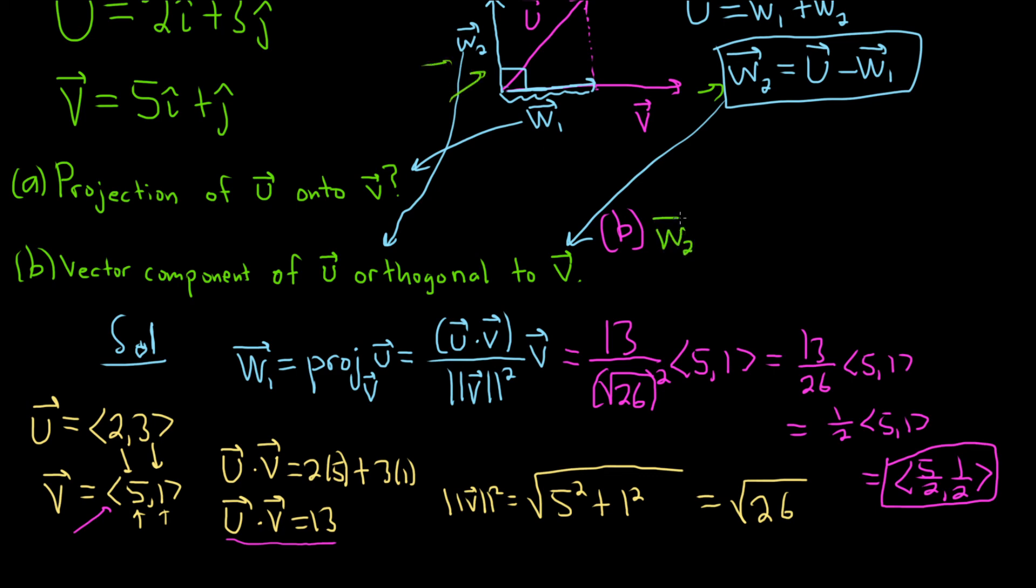So w2 is equal to u, which is over here. So 2, 3 minus w1, which we worked out, which is our previous answer. So 5 halves comma 1 half. Fraction time. We got to think of these as numbers over 2. So 2 is really 4 halves and 3 is really 6 halves, so we can perform the subtraction. So 4 halves minus 5 halves is negative 1 half. 6 halves minus 1 half is 5 halves.